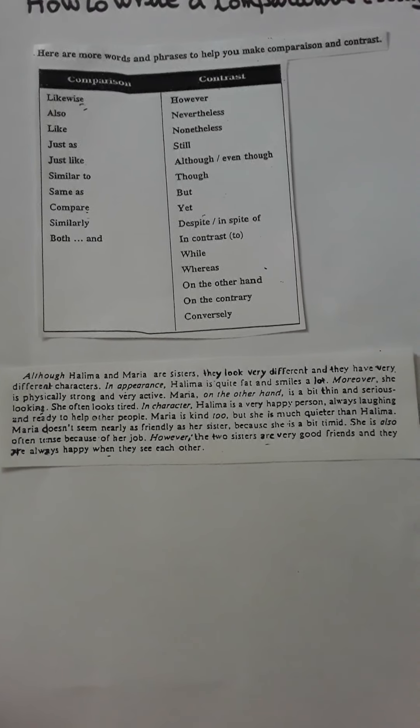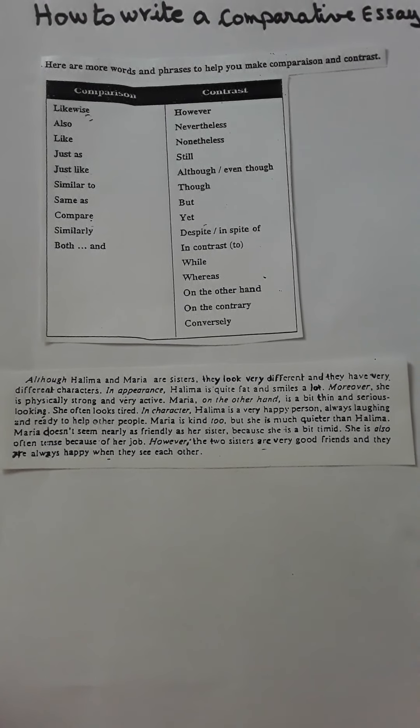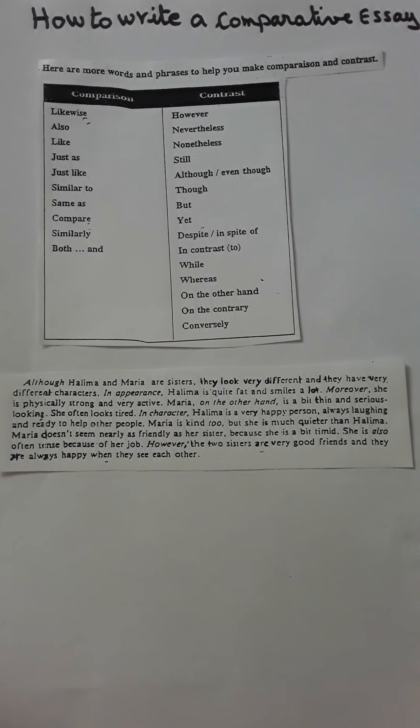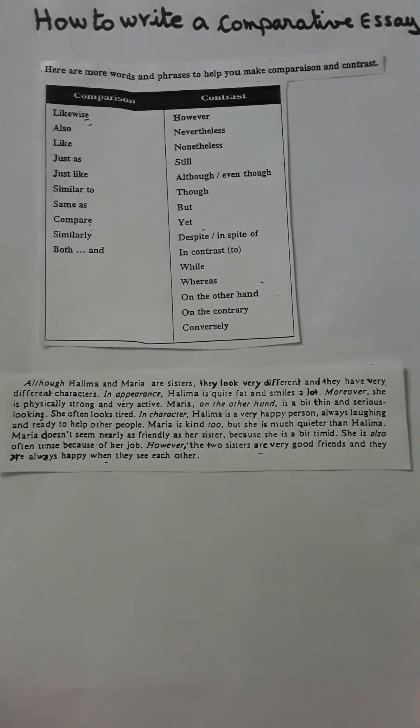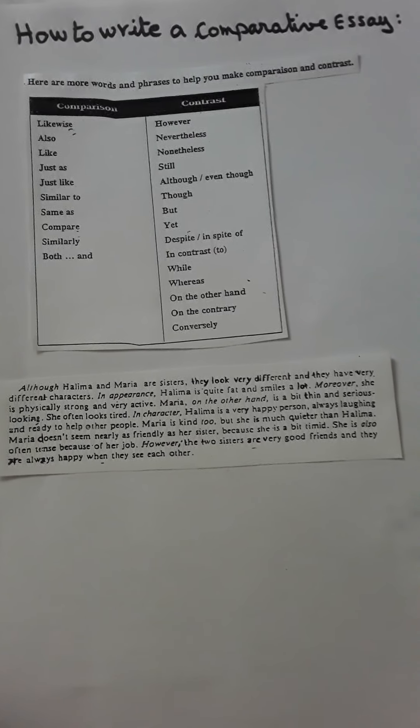The structure of this paragraph is as follows. The topic sentence gives us the information that will be discussed in the supporting sentences — the comparison between the two sisters in appearance and in character. In the supporting sentences we have information about the appearance and character of both sisters, stating the differences. The concluding sentence begins with 'however': 'However, the two sisters are very good friends.' This is the common point. So this is a paragraph — very short, but it includes all the information needed to compare two people.